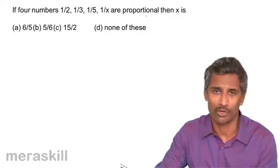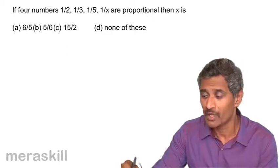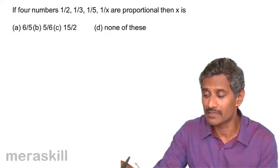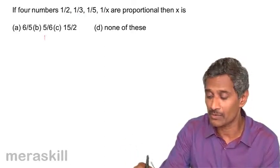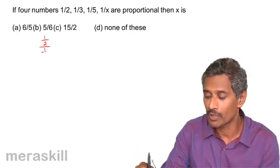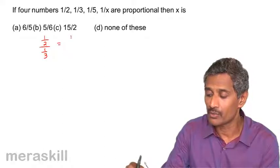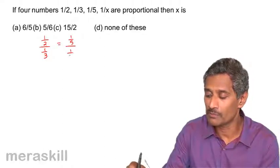So, this is A, this is B, this is C, this is D, A by B. So, it's half upon 1 by 3 is equal to 1 by 5 upon 1 by X.